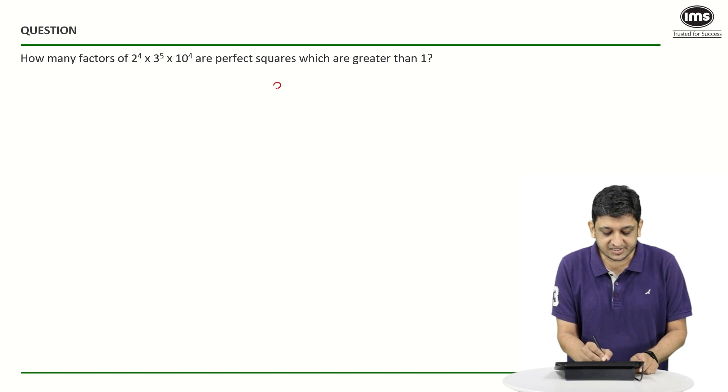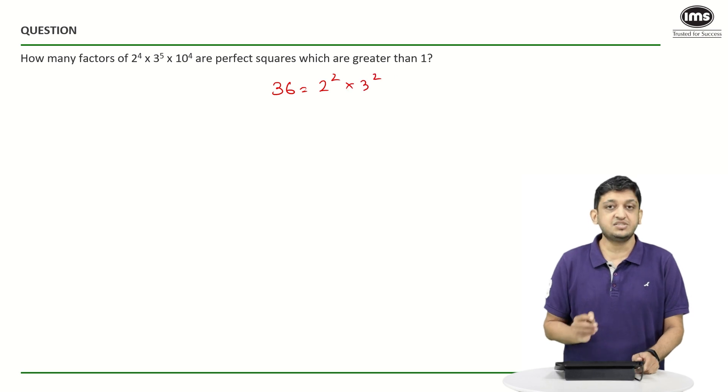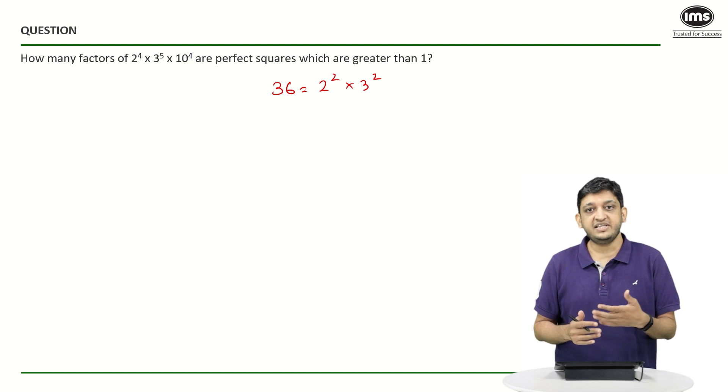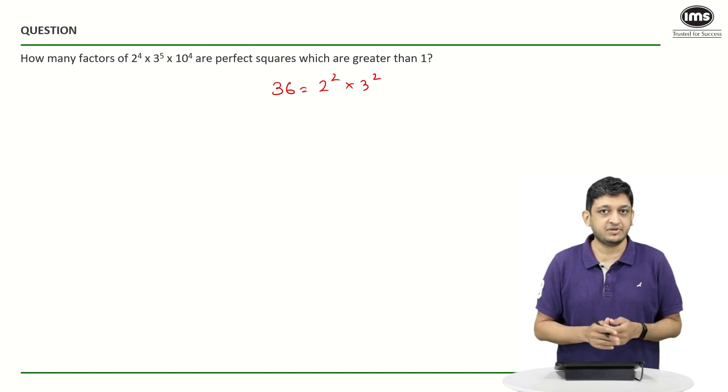You can take a couple of perfect squares and see it for yourself. So let's say I am looking at this number 36. 36 can be written as 2² × 3². The power of 2 is even, the power of 3 is also even, meaning that this number will be a perfect square.